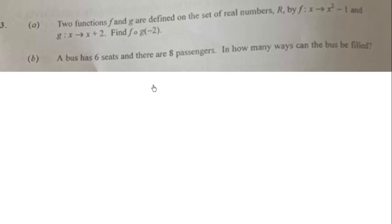Let's do the a part first. The function f can be rewritten as f(x) = x² - 1 and g can also be rewritten as g(x) = x + 2. To find f∘g(-2), we need to get an expression of f∘g(x).